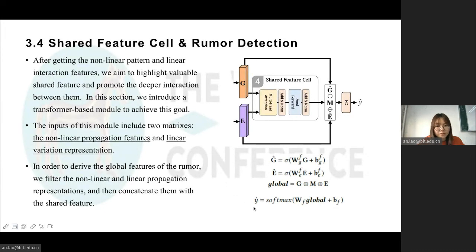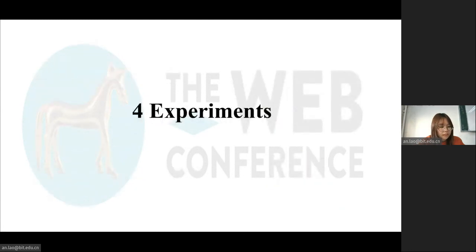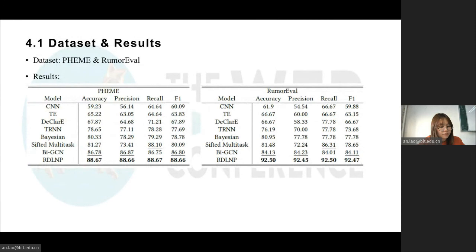In this paper, we turn the rumor detection task into a binary classification problem. To infer the labels of the rumors, we apply the fully connected layer and activation layer to calculate the label. We choose cross-entropy as our loss function. In order to facilitate comparison with the baseline methods, we evaluate our proposed method on two public datasets. We can observe that our proposed RDLNP achieves state-of-the-art performance on both two datasets, a departure from the previous study.